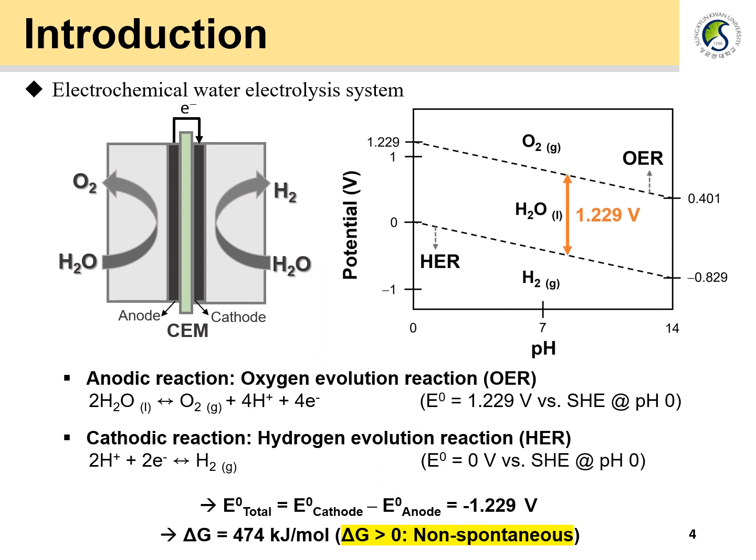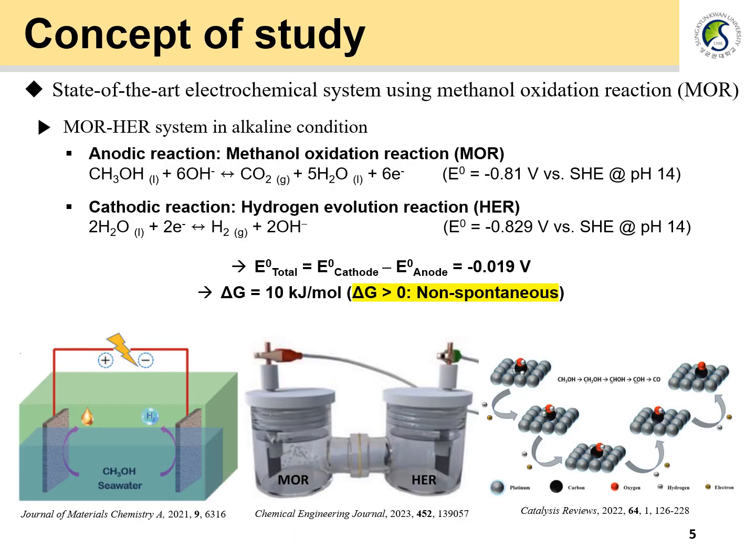Moreover, the oxygen evolution reaction, which is an oxidation reaction, is a sluggish reaction that requires a large overvoltage, so the overall cell potential is increased and requires more power to drive the system. To overcome these limitations, we wanted to replace the oxygen evolution reaction with another oxidation reaction. Research on the application of alcohol oxidation to hydrogen production systems is still actively underway. The methanol oxidation reaction is known to have a negative standard potential and a relatively low overvoltage compared to the oxygen evolution reaction. Therefore, when the methanol oxidation reaction and hydrogen evolution reaction occur under basic conditions, the total cell potential is –0.019 V, which requires much less energy than the conventional –1.229 V. However, there is still a limitation in that it remains a non-spontaneous system that needs to be powered, so we came up with a new system to overcome that as well.